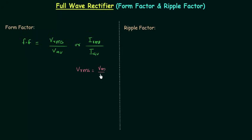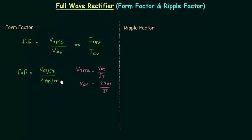We already know V_rms is equal to V_m divided by root 2, and average voltage or DC voltage is equal to twice of V_m divided by pi. So form factor equals V_m divided by root 2, divided by twice of V_m divided by pi. V_m cancels out, and we have pi divided by 2 root 2, which gives 1.11 as the value of form factor for the full wave rectifier.